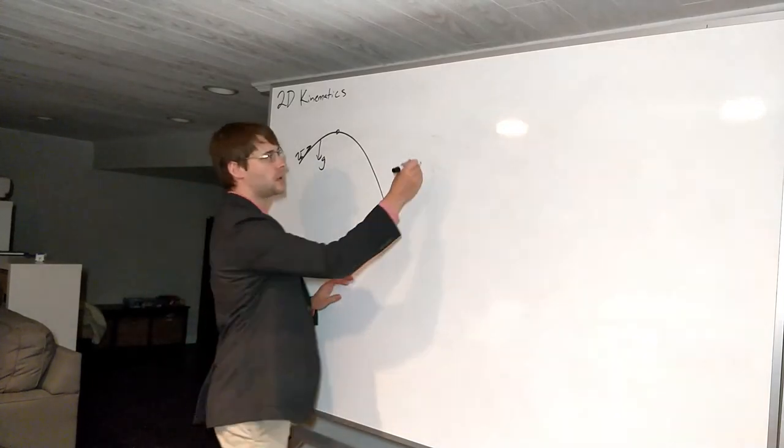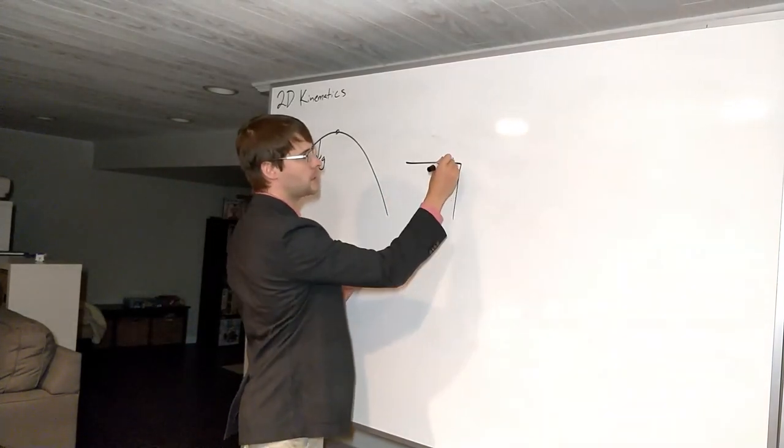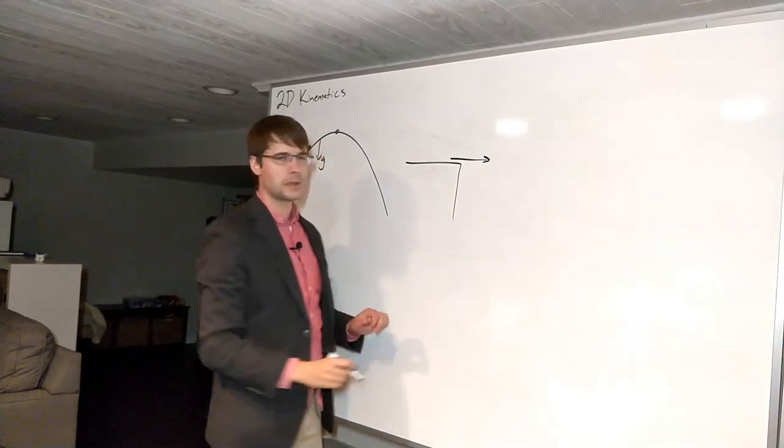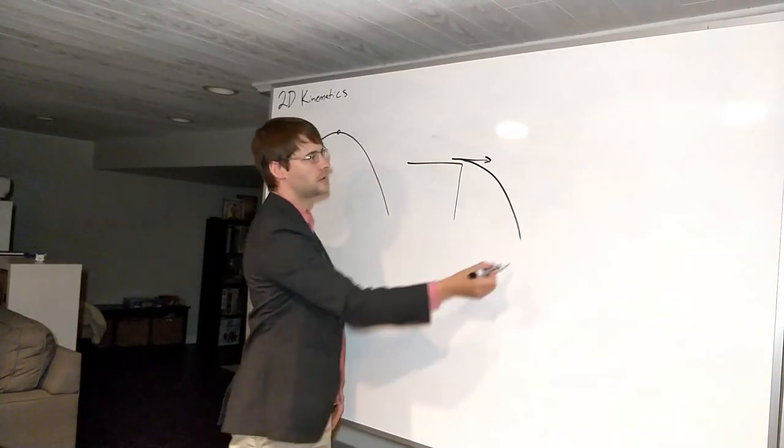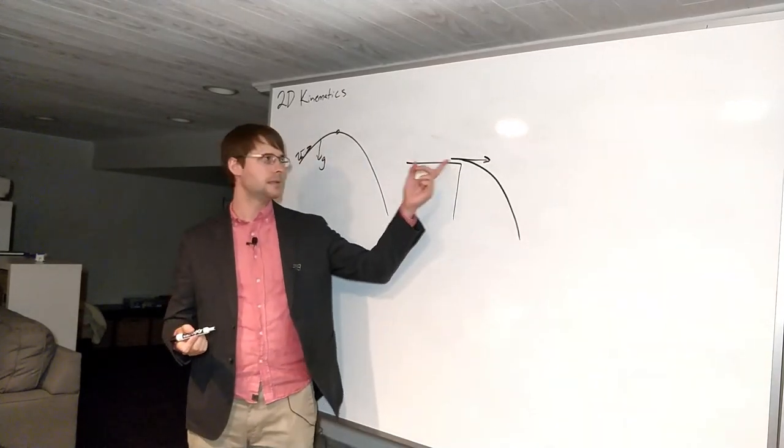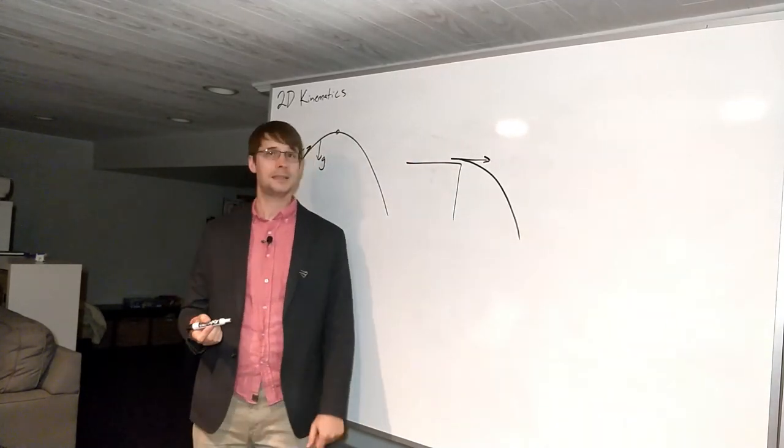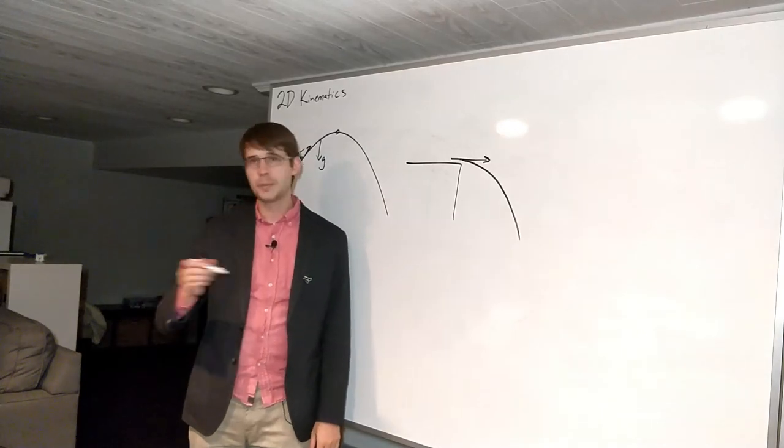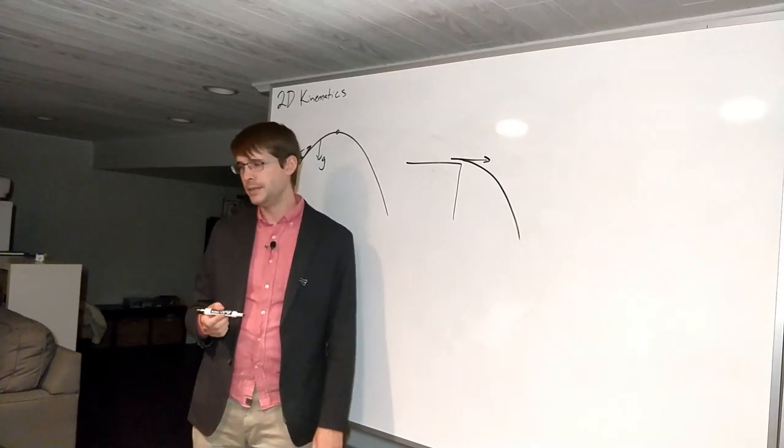Sometimes you'll come across a problem where an object is going straight off of a cliff horizontally and then it begins to fall to the ground. If you have one of these, the thing to remember is it is moving to the right in this case. That means it is not moving up, it is not moving down, so the initial velocity in the y direction is zero.